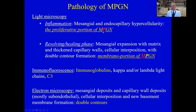What is MPGN in a little more detail? The inflammatory part is the proliferative component — that's where the term MPGN comes from: membranoproliferative glomerulonephritis. The 'P' portion stands for proliferative, and the resolving portion is the membrane or 'M' portion, where you get mesangial expansion with matrix and double contouring. The proliferative portion refers to the mesangial and endocapillary hypercellularity, while the thickening of the GBM and mesangial expansion represents the membrane portion.